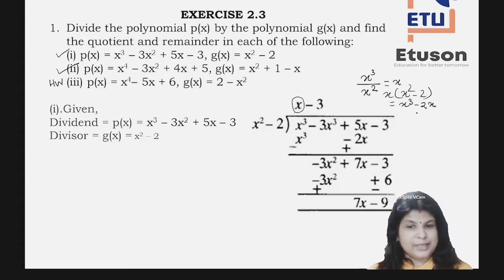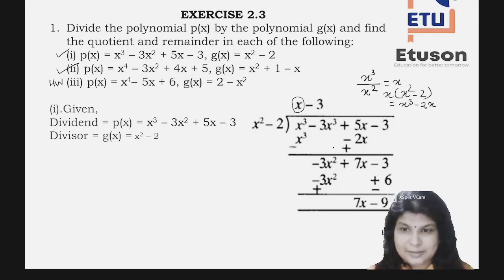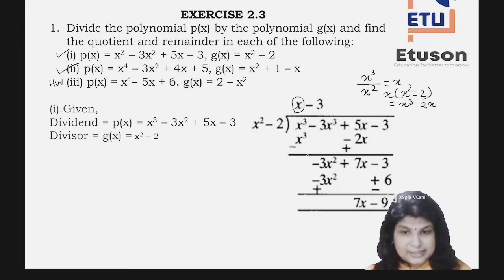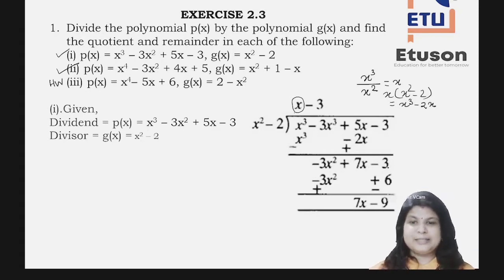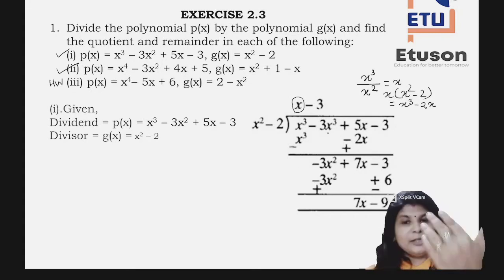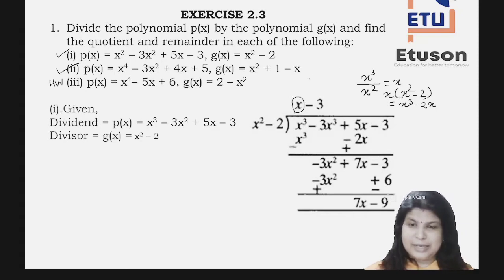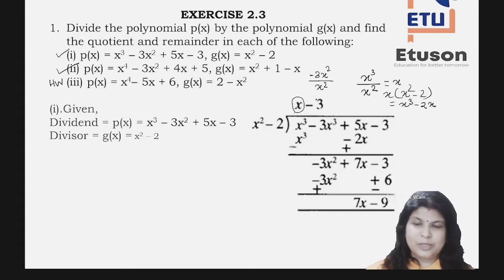After subtraction, your new dividend is -3x² + 7x - 3. Now, following the same process: -3x² divided by x² gives -3. So the quotient so far is x - 3. Now multiply -3 with the divisor x² - 2, giving -3x² + 6.